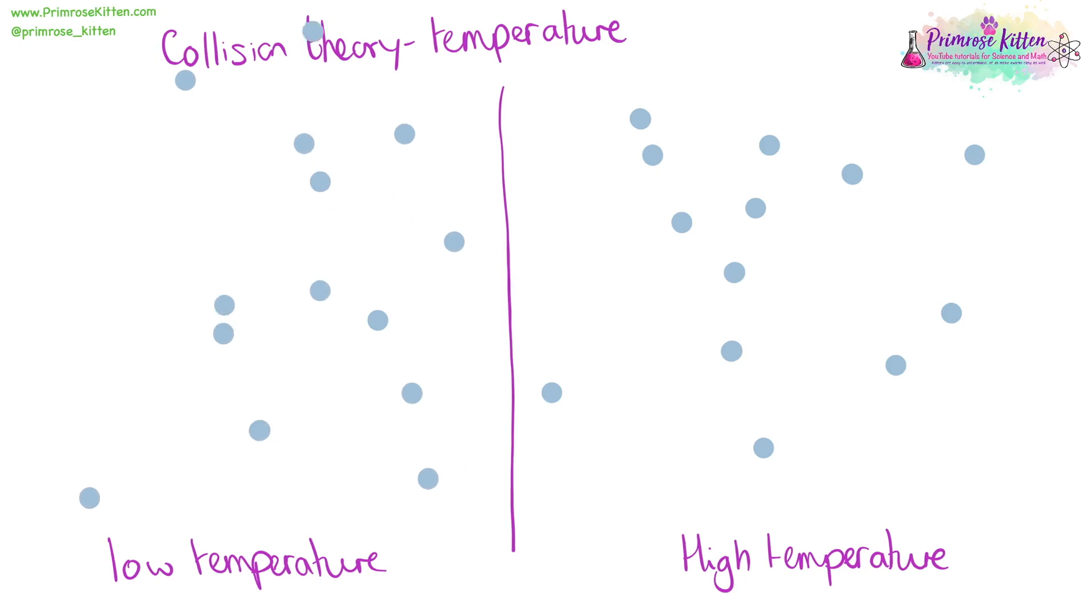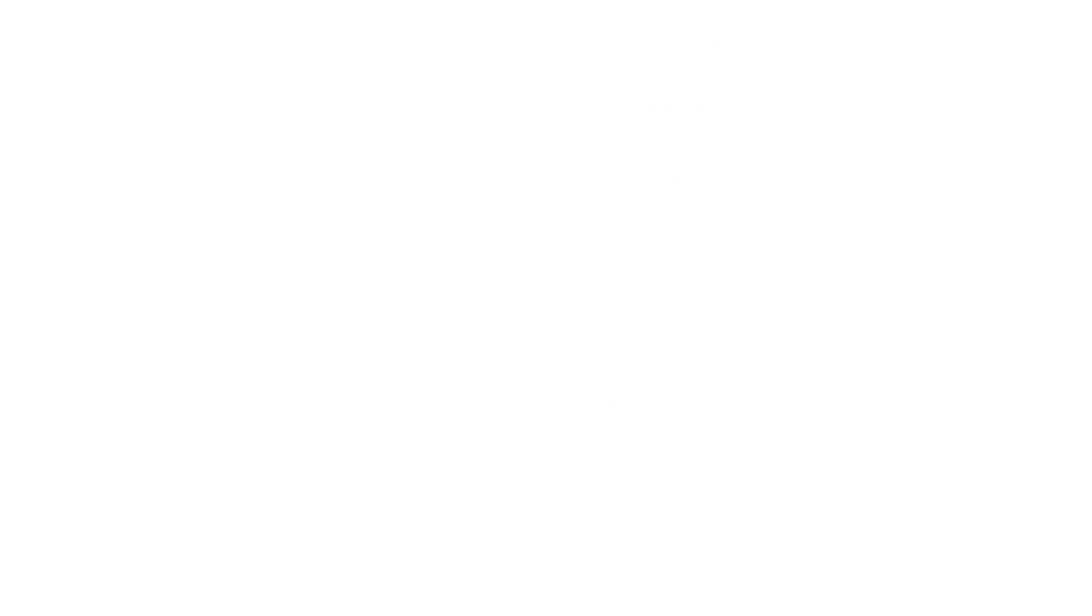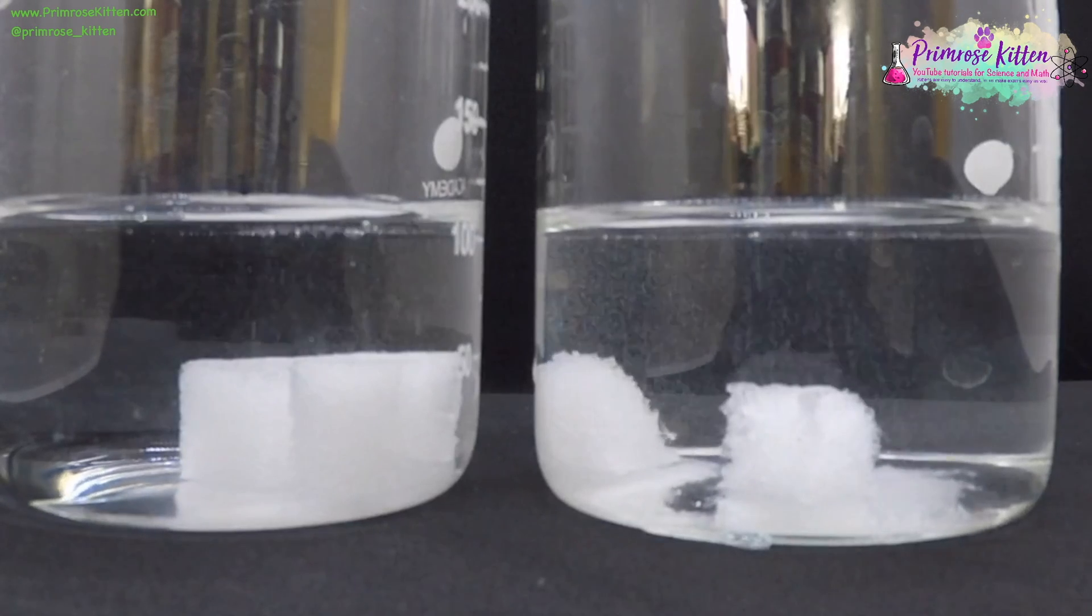When we have particles moving around at a low temperature, they're moving slowly with not much energy. When two collide, they hit each other and have a reaction, but sometimes they're going to collide and there's not going to be a reaction. When particles move around with high temperature, at high speed, with lots of energy, when things collide, you are going to get a lot of reactions taking place. Rate of reaction is going to be affected by temperature.